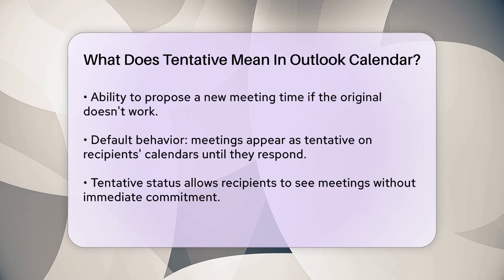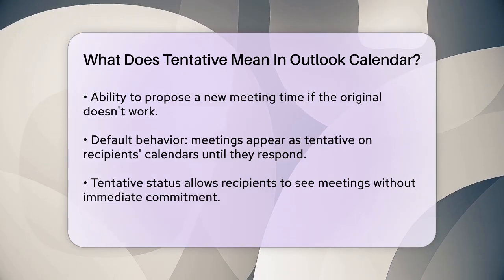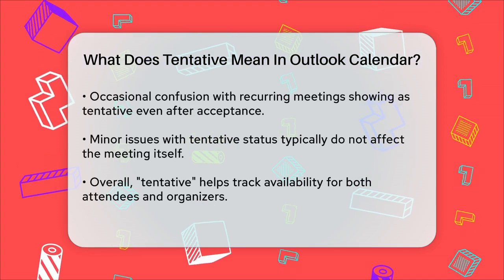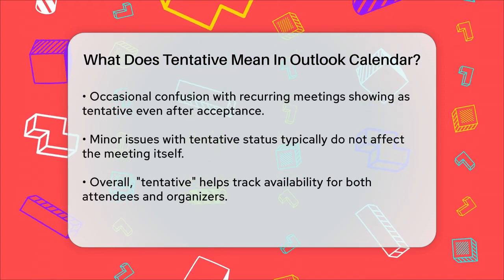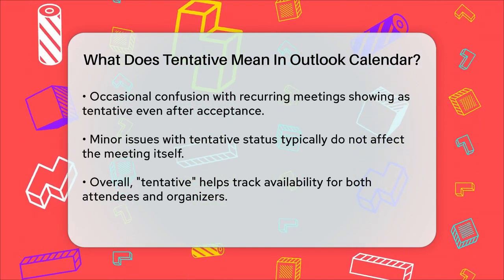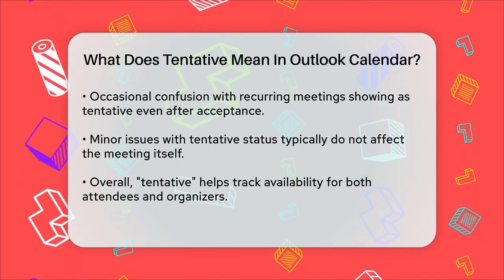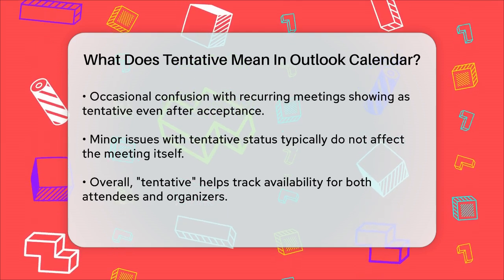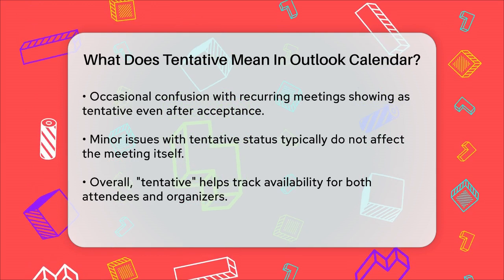In some cases, you might notice that a meeting remains tentative even after you've accepted it. This can sometimes be due to recurring meetings or specific settings in your calendar. For instance, if it's a recurring weekly meeting, it might show as tentative even after acceptance, which can be a bit confusing. However, this is usually a minor issue and doesn't affect the meeting itself.